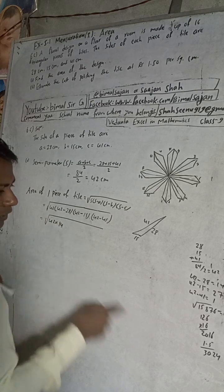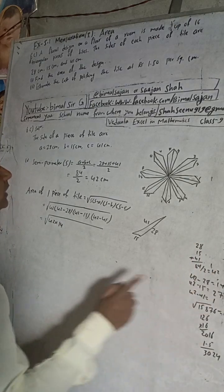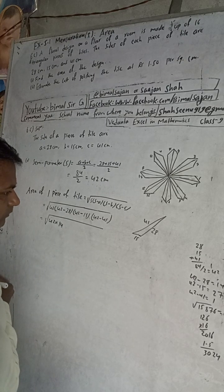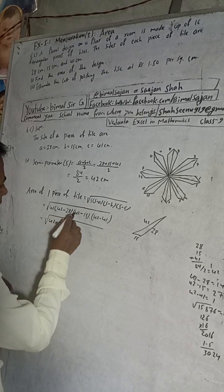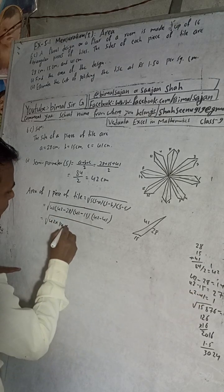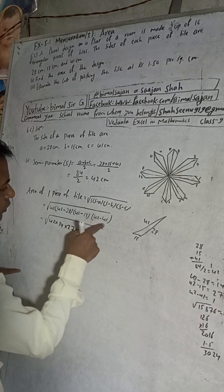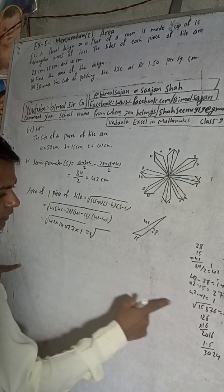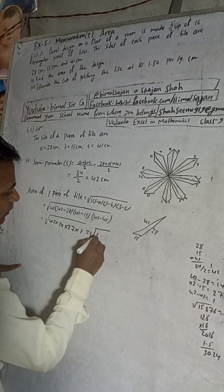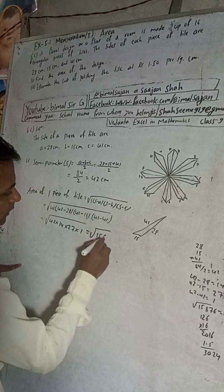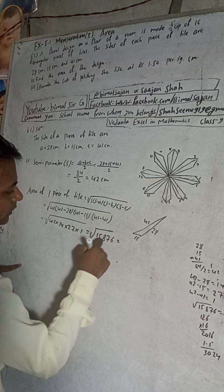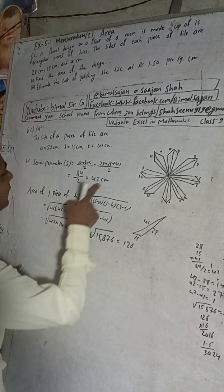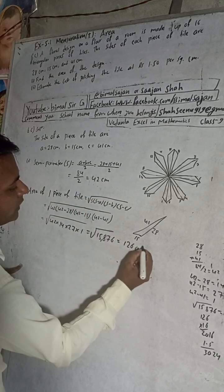I don't have calculator, so first calculator with this mobile. 14, and 42 minus 15 is 27, into 27, into 42 minus 41. When you multiply this all, you will get here 15,876, and when we take the root, we will get 126, and this is CM square, area of CM square.